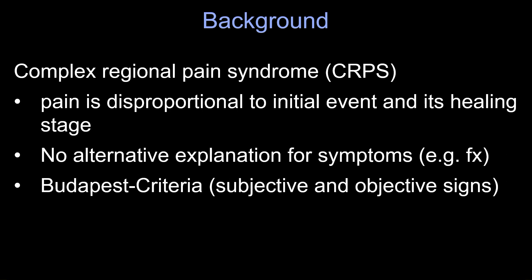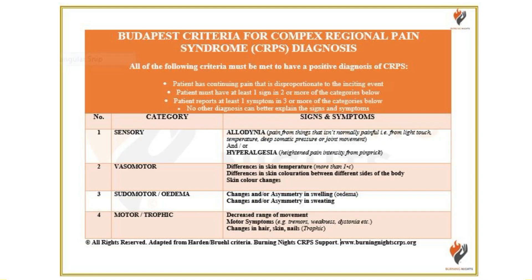For that we have the so-called Budapest criteria, which is a collection of different clinical findings — some objective markers and some subjective markers across different domains. None of these domains contain imaging. This is important because the clinical criteria changed in 2012, and MRI or imaging is not part of the diagnostic criteria.